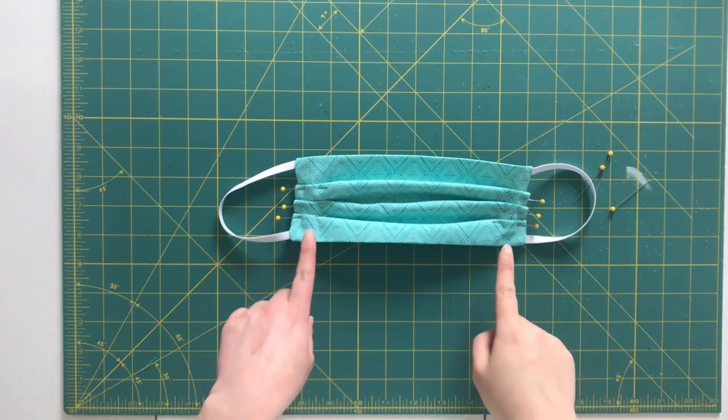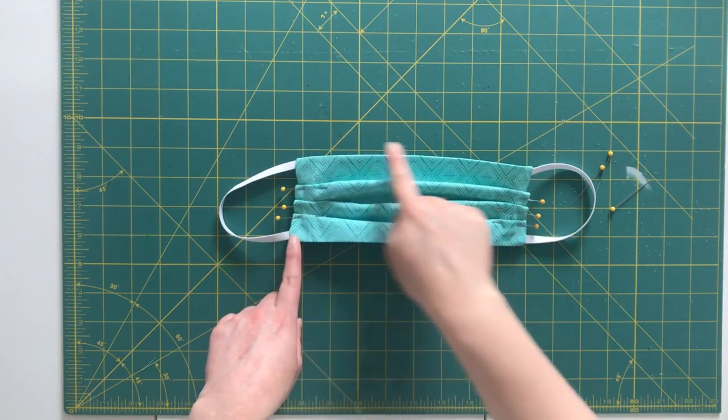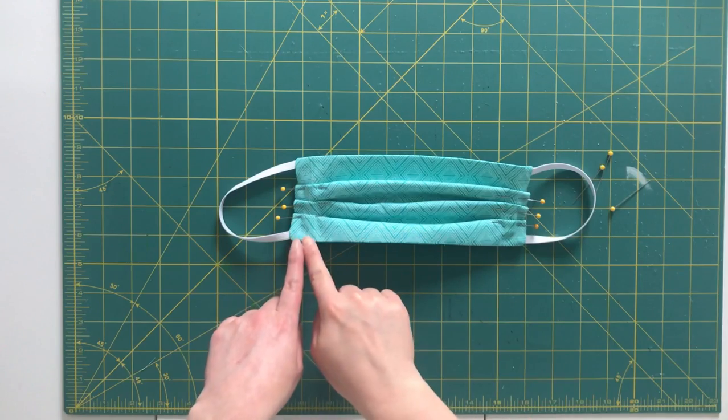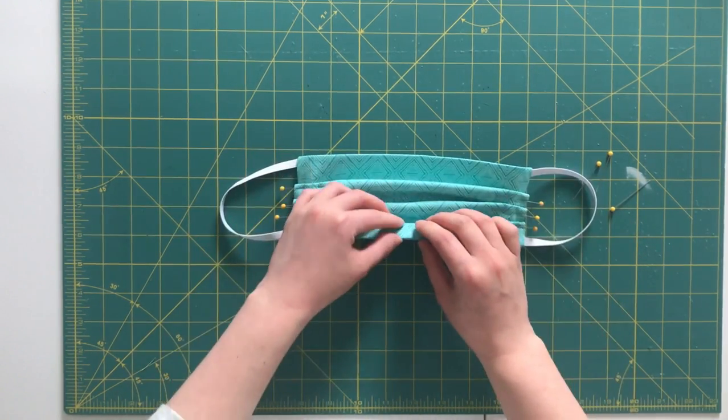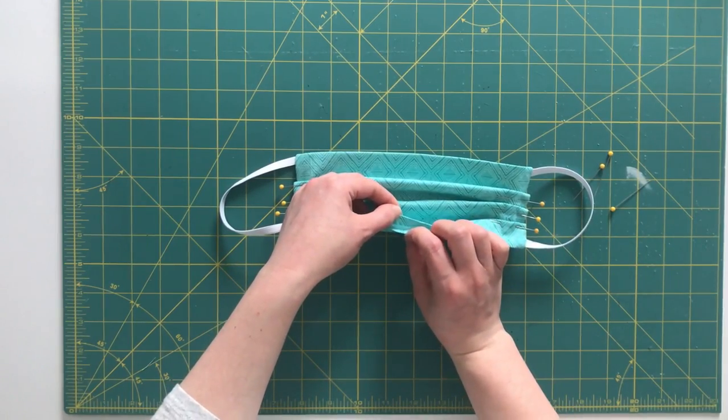Now that my pleats are all marked, I'm going to sew around the entire perimeter of my mask. And that's going to catch those pleats and sew them flat and also close up my opening down here.